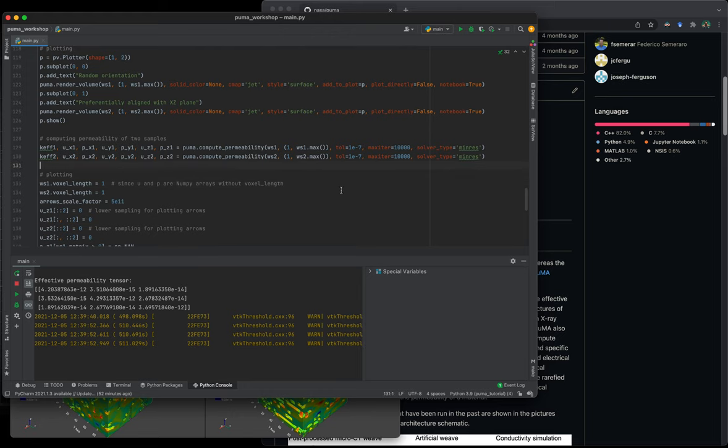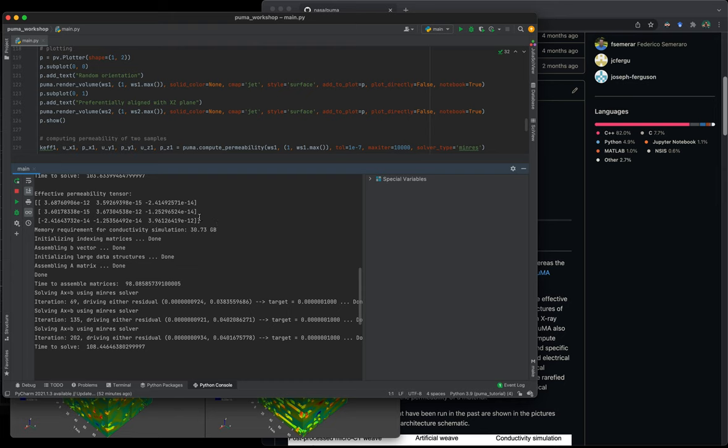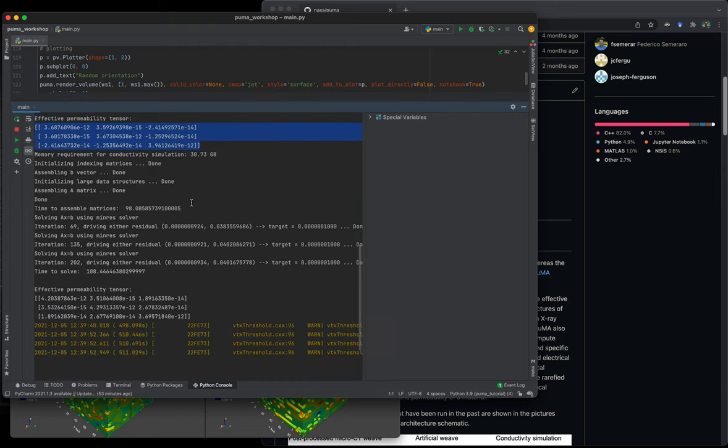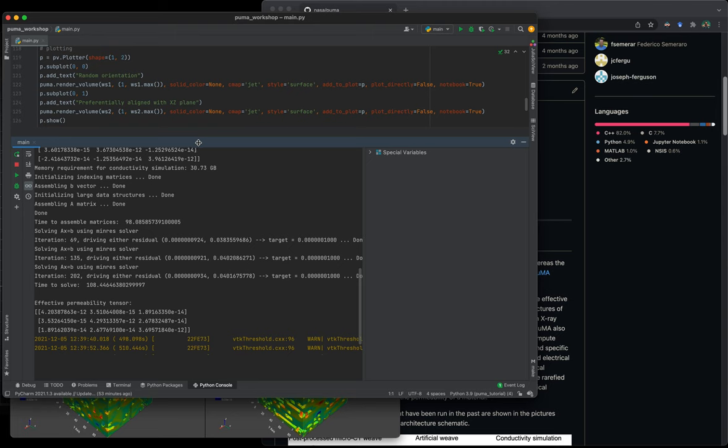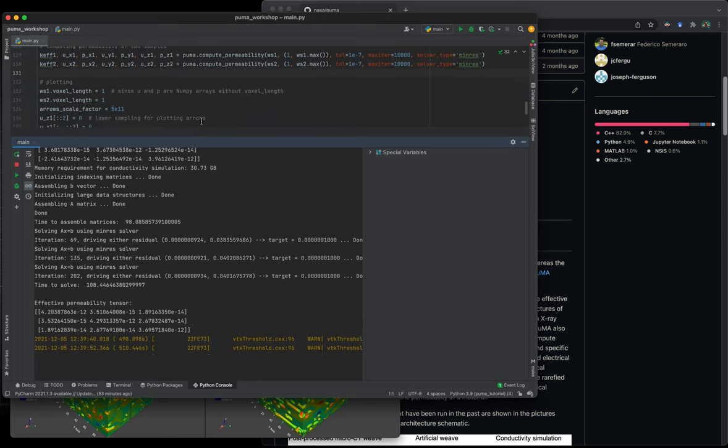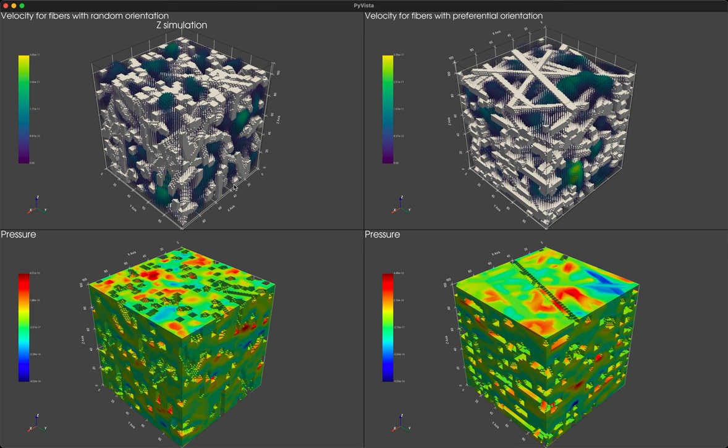So convergence is now being reached. And so the two effective tensors have been output, as you can see up here and down here. So something else that I've added is also some plotting for the velocity and pressure fields that are shown in here. So we can go and analyze them a little bit.